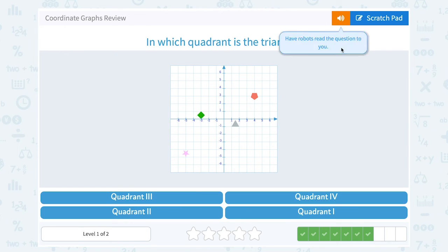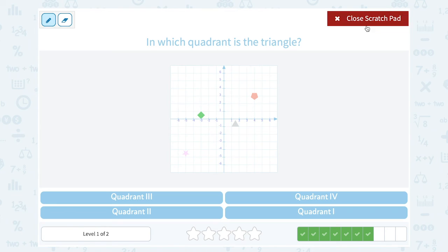In which quadrant is the triangle? Okay, well remember our quadrants are 1 and then we go counterclockwise from there: 2, 3, and 4. Since we are looking for the triangle, the triangle is in quadrant 4.